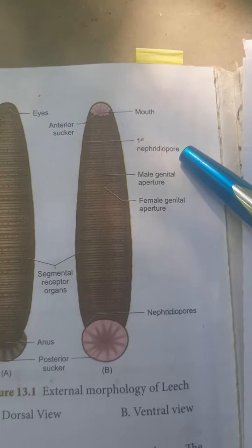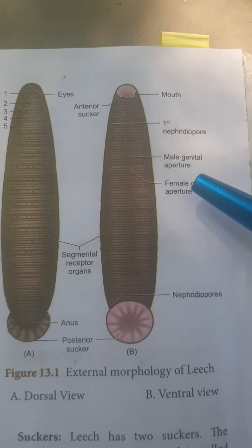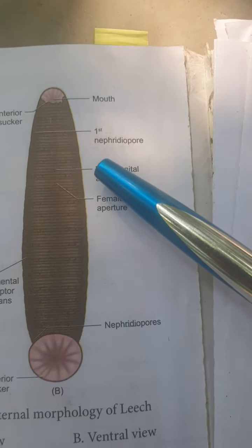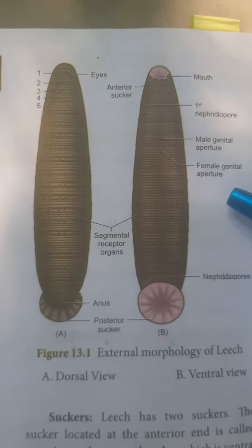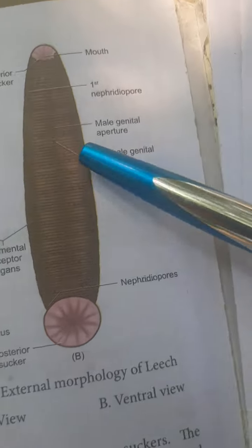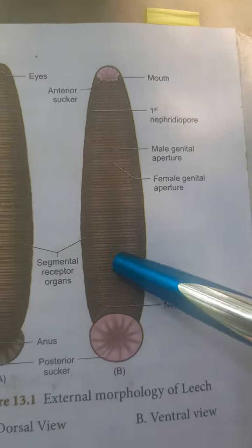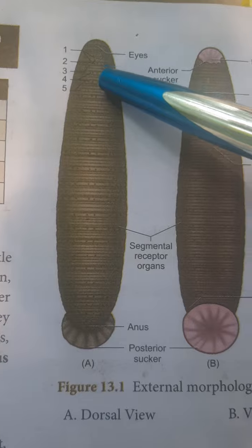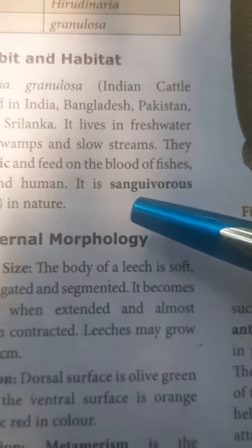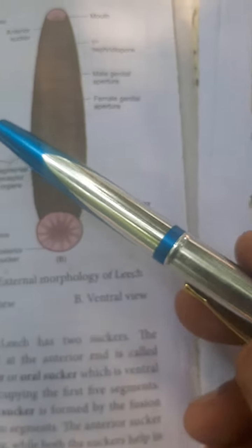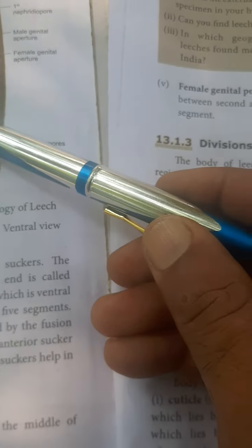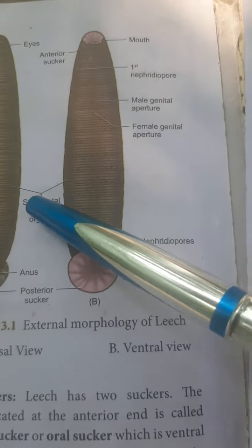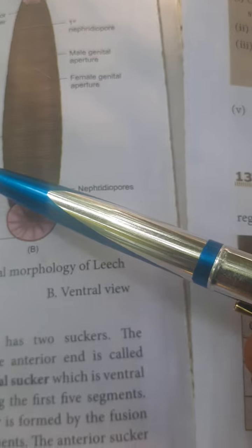This is the mouth, then nephridia for excreting. Next is the female and male genital aperture - upper part is male genital aperture and lower part is female genital aperture. This is the ventral view - ventral view means facing up. And this is the dorsal view.